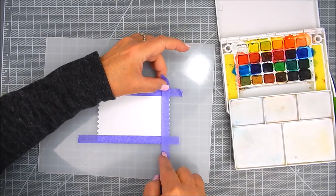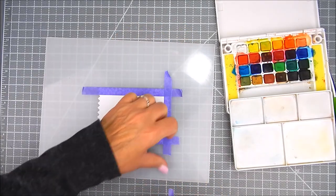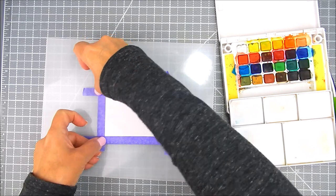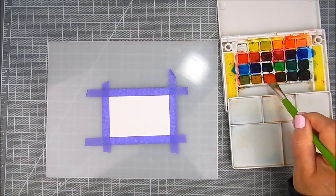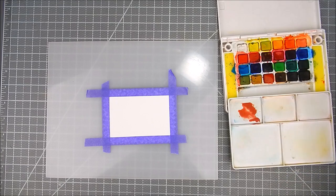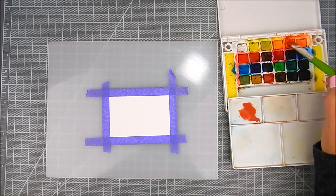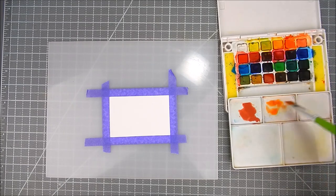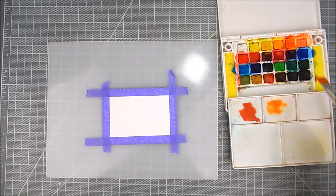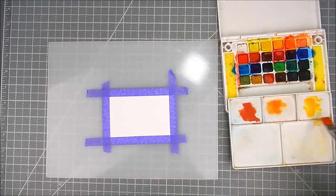On the smooth side of the watercolor paper I'm going to add purple tape. Unity carries purple tape. I'm going to add watercolor to the inside part of this tape frame.